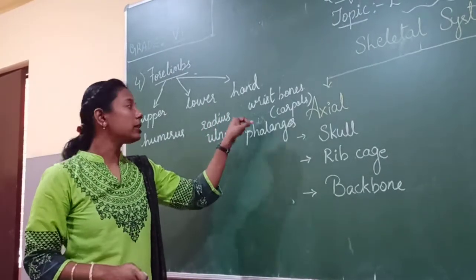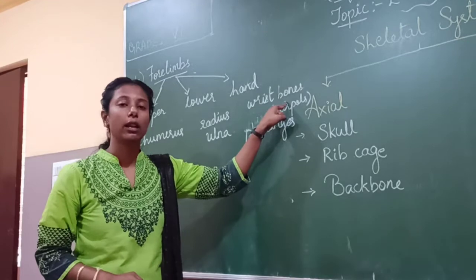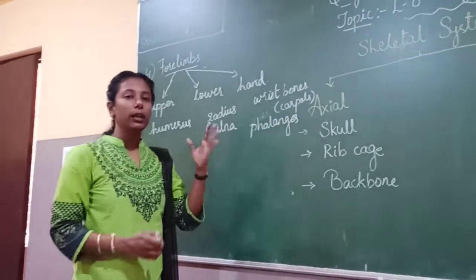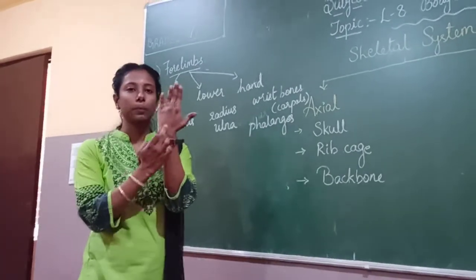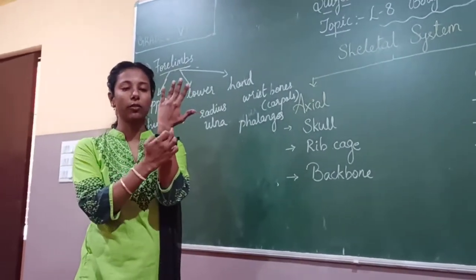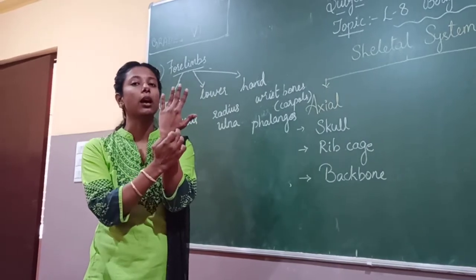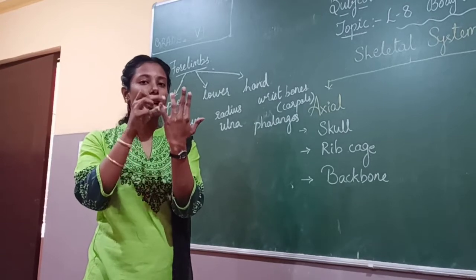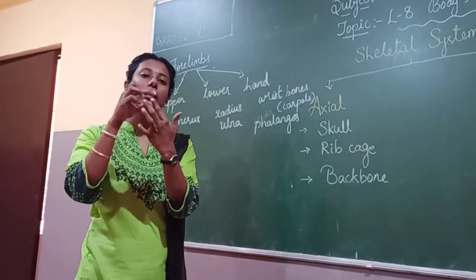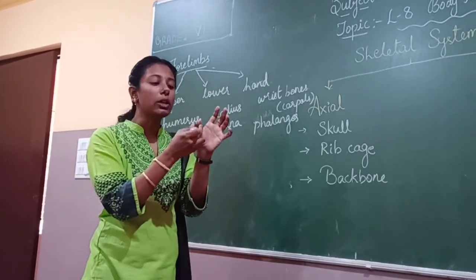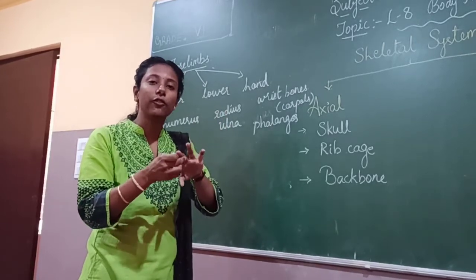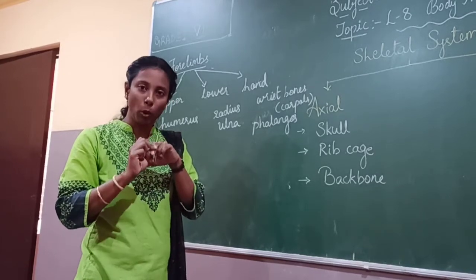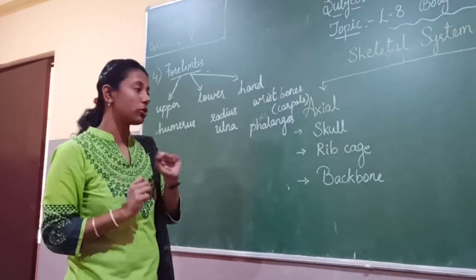The hand is made up of wrist bones called carpals. The middle part of the hand consists of metacarpals, and the finger bones are called phalanges. You can touch and feel each bone of your finger — they are not one single bone.